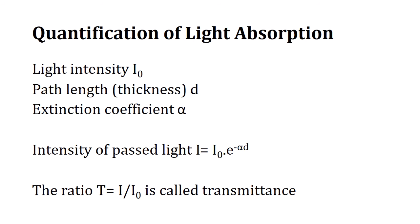Suppose I₀ is 10 times more than I, meaning I is 10 times less than I₀. In that case, the I/I₀ ratio will be 1/10 or 0.1. So we can say 10 percent is transmitted and 90 percent is absorbed.